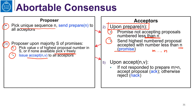When an acceptor receives an accept message (n, v), if it has not promised to another proposal with a higher number than n — that is, if it has not responded to a prepare with a number higher than n — it accepts the proposal and sends an acknowledgement. Otherwise, it sends a rejection, because it has already made a promise to a higher proposal number.